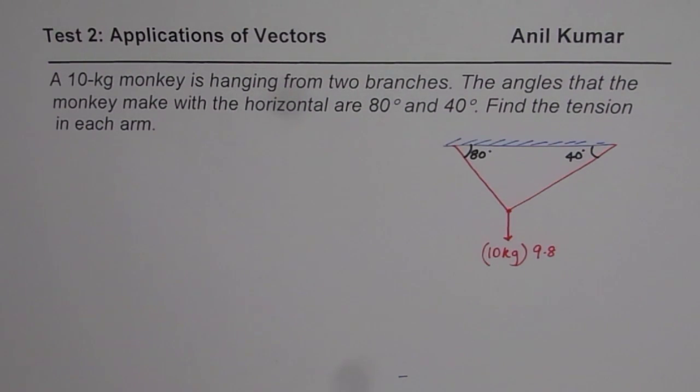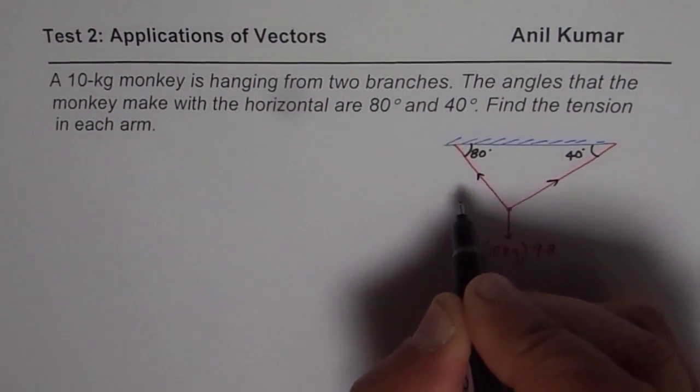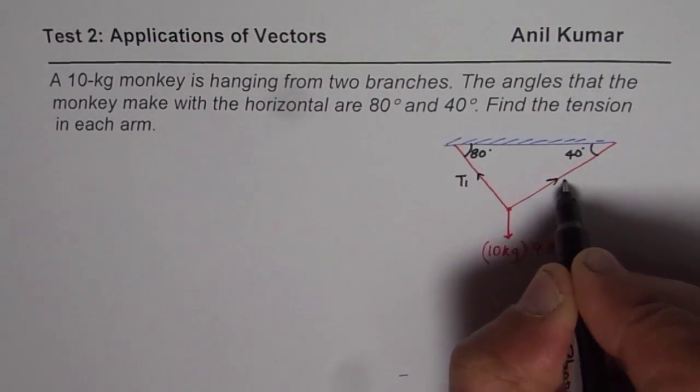Remember mass should be multiplied by the force of gravity, which is 9.8, and then you get Newtons, the force. Once you have sketched this diagram, to find the tension, let us say the tension of these two arms may be T1 here and T2 on the other side.